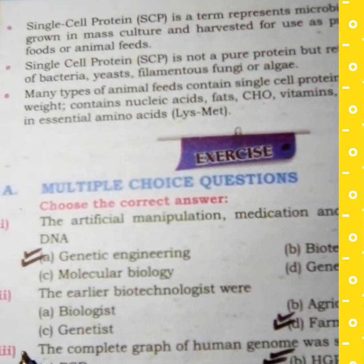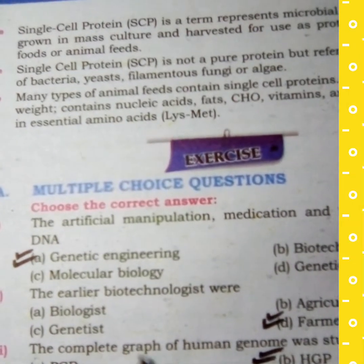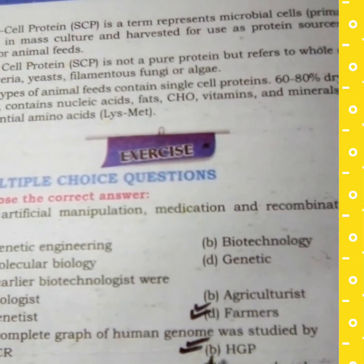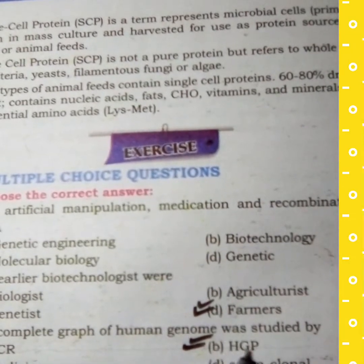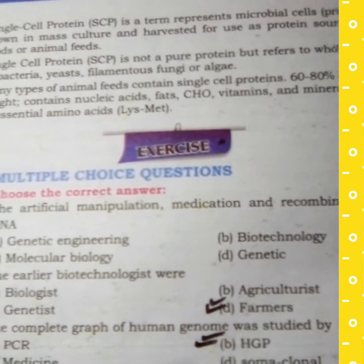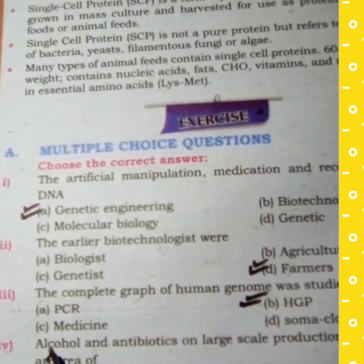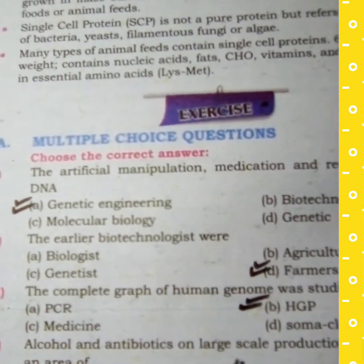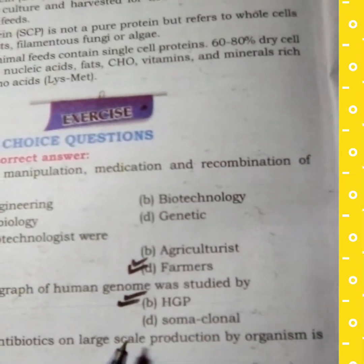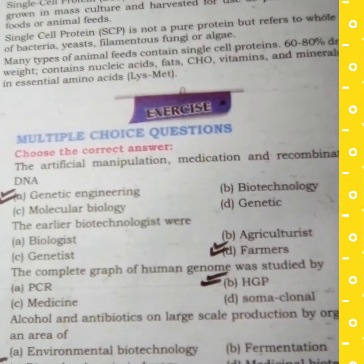MCQ number 3: The complete map of the human genome was studied by — option B is the correct answer, referring to the Human Genome Project (HGP). MCQ number 4: Alcohol and antibiotics on large-scale production by organisms — this is an area of biotechnology.